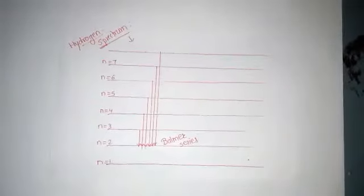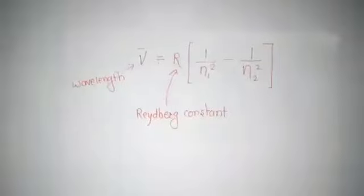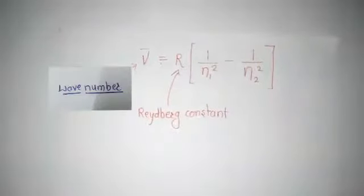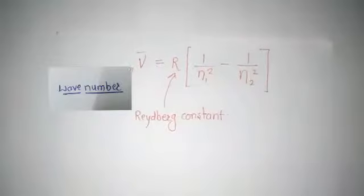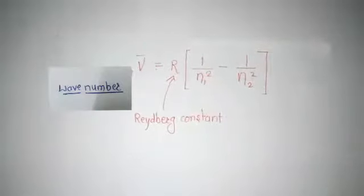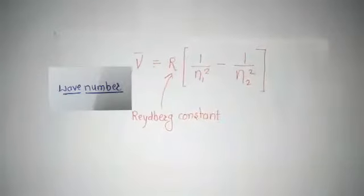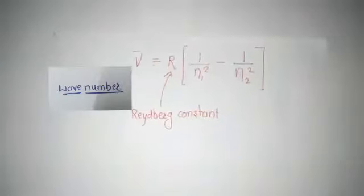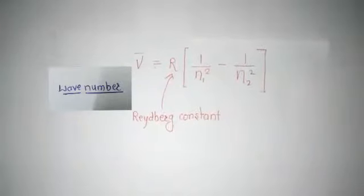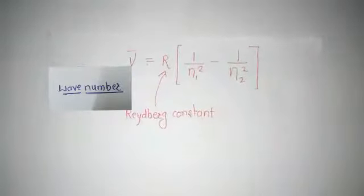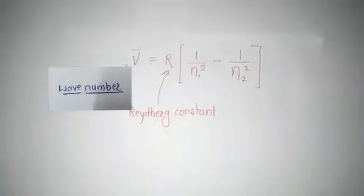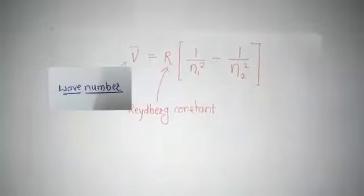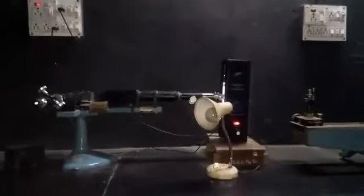Now, the Rydberg constant, denoted by R. In the formula for wave number of lines in the Balmer series — V-bar equals R times (1/n₁² minus 1/n₂²) — R is called the Rydberg constant and has the value of 109677.58 cm⁻¹.